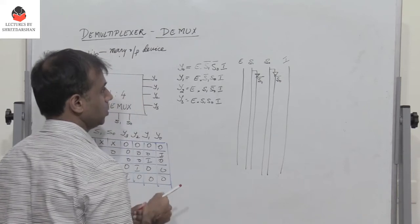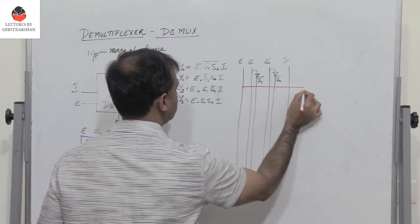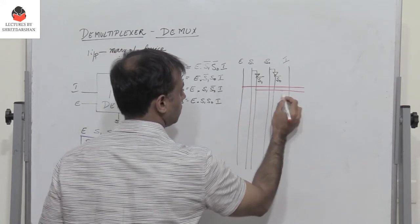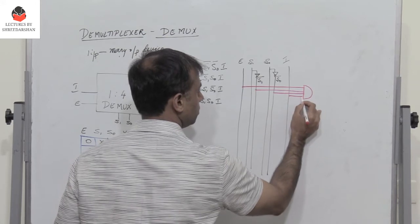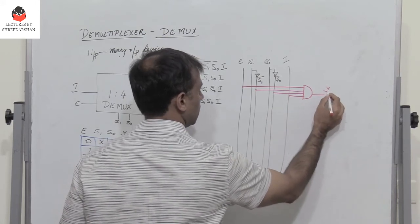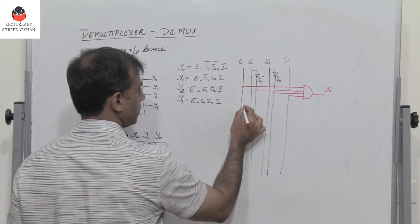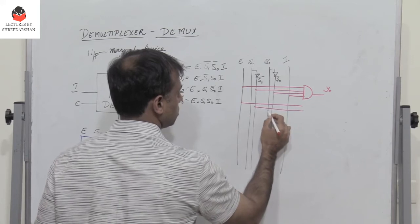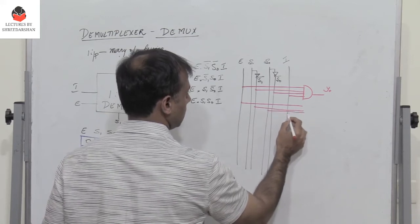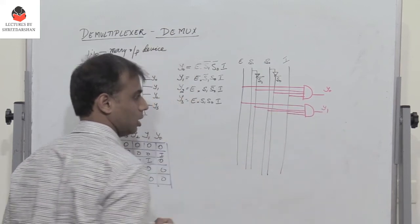So now how do I get the output? I get the output y0 if I pass e, s1 bar, s0 bar, and i through a four input AND gate, I get y0. Now similarly for y1, you have e, and then s1 bar, s0, and then i pass it through a four input AND gate, I get y1.